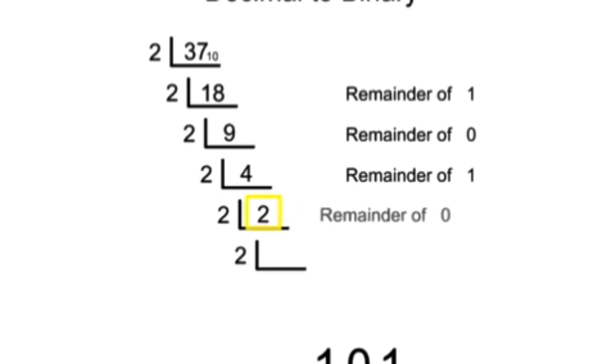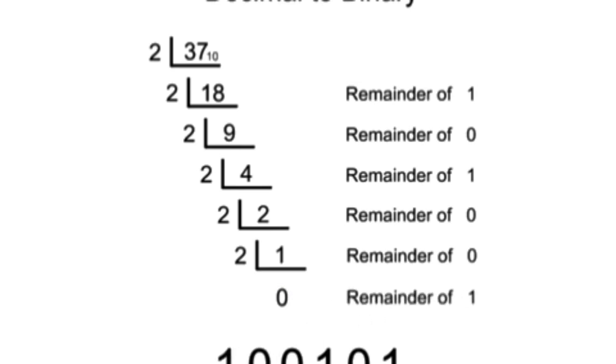Applying this divide by 2 process to each new calculated quotient derives the remainders that become the 0s or 1s used to create the binary string. Continuing until the quotient is 0 and can no longer be divided by 2 completes the conversion process, and you have your binary number.